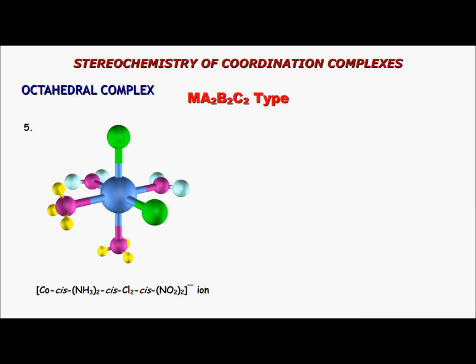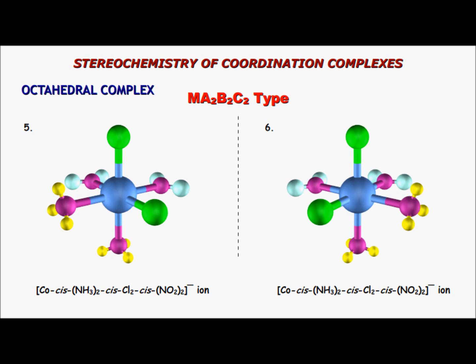The fifth isomer has amine, chlorido, and nitrito all in the cis position. This isomer has no plane of symmetry and has an enantiomer, so the total number of isomers is six.